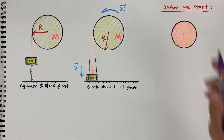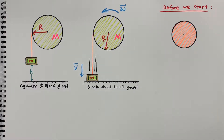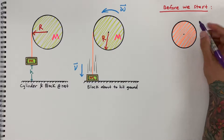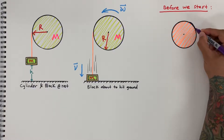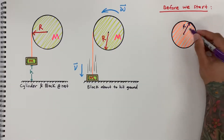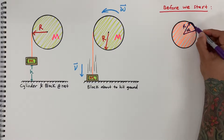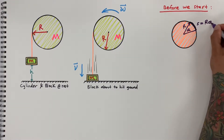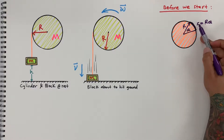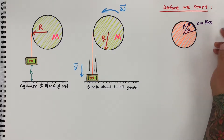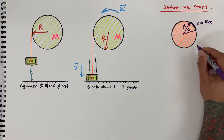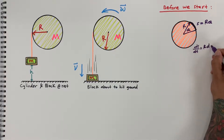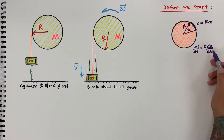Before we start, let's go over some things we need to know. This circle represents an arc length. We have a radius r and an angle theta, and the arc length s equals r·theta. If I take the derivative of s, I get ds/dt, and on the other side r stays the same and I get d(theta)/dt.